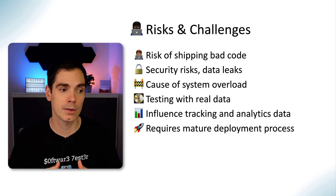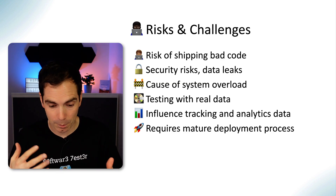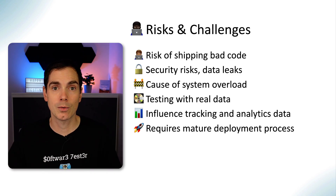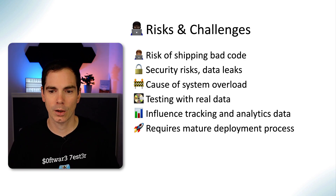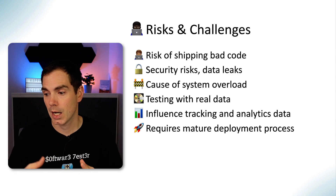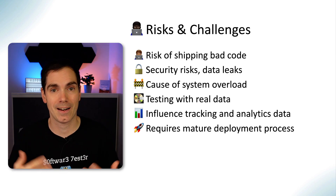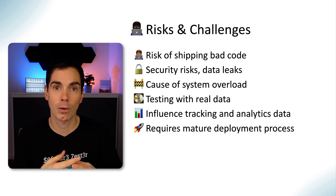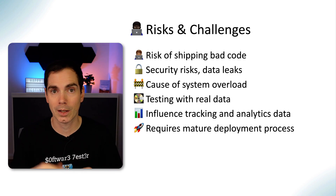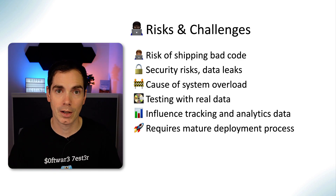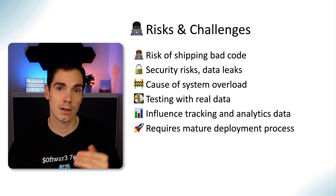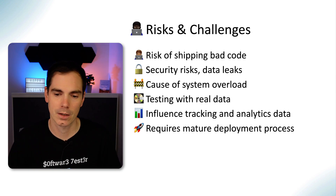Testing in production also requires a mature deployment process. If your deployment process is still manual — executing scripts manually to get code to production — that's not ideal. Testing in production requires an automated, solid deployment pipeline so your team can react fast when something goes wrong: fix the malfunctioning code, run regression testing, and ship quickly. Ideally you also have feature flags implemented so you can switch off malfunctioning features quickly.